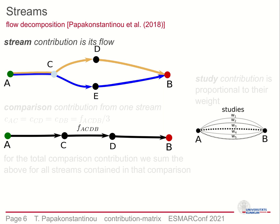For example, in this figure the total flow is divided into the upper orange and lower blue stream. In order to calculate the contribution of studies from streams, we first break up the contribution of a stream into its constituent comparisons. We then assign the contribution of a comparison to be that of the stream divided by its length. So for the example here we divide the flow ACDB by 3.